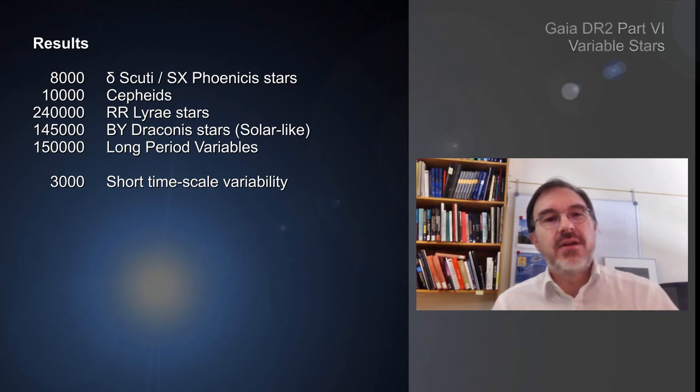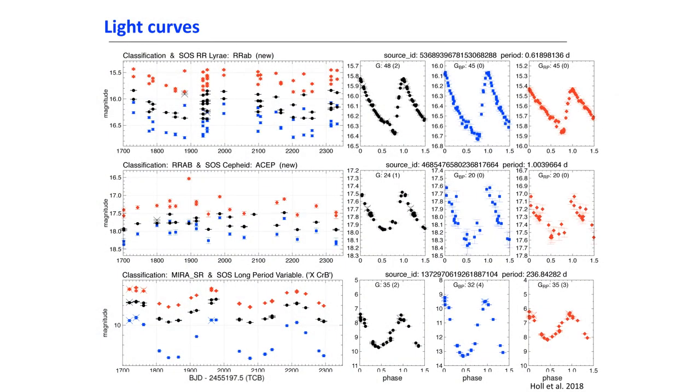If you look at the light curves we obtain, we have on the left panel the time series in Julian date with three bands: RP in red, G band photometry in black, and BP in blue. On the right, you have the folded curves in the different bands where the range has been conserved in the different plots.